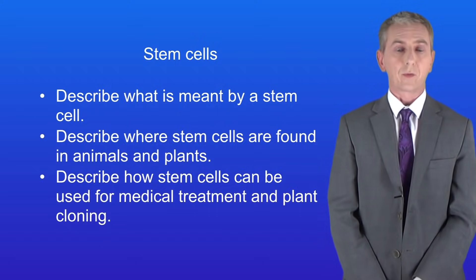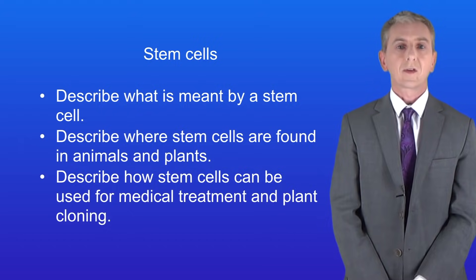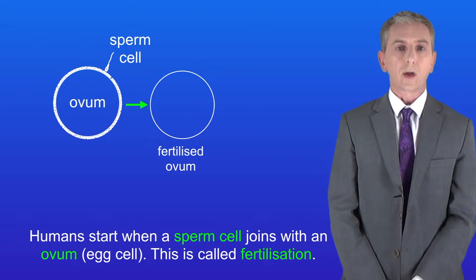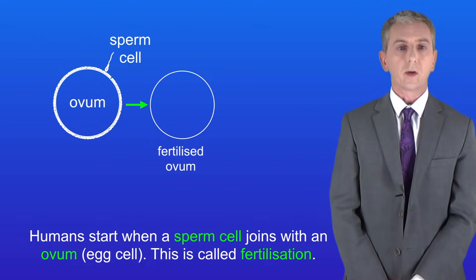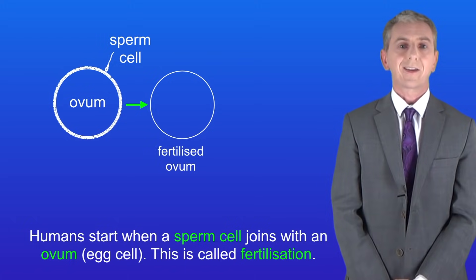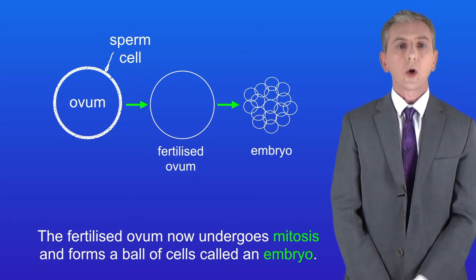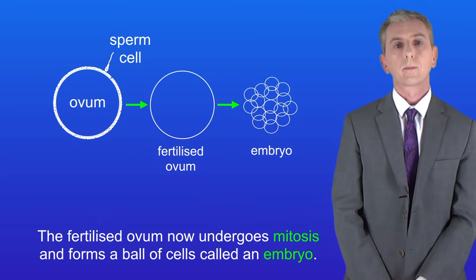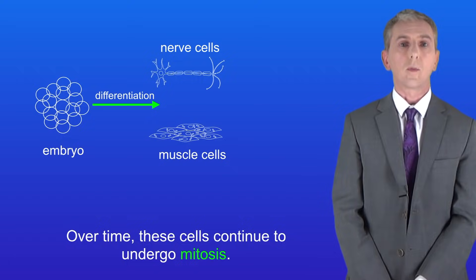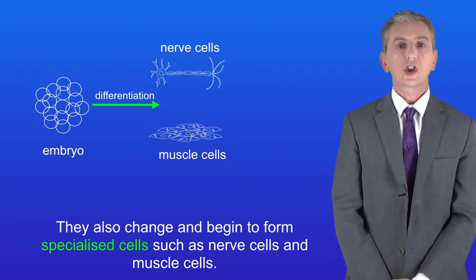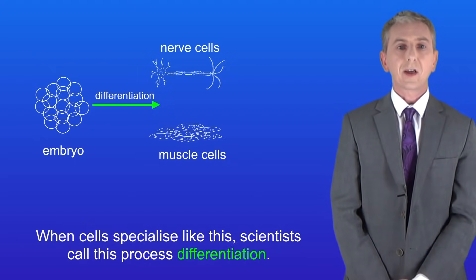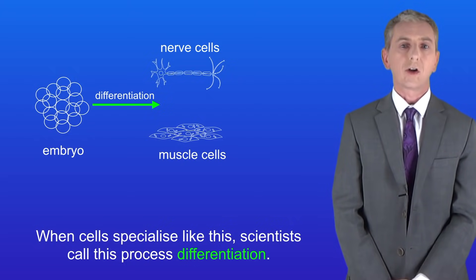Let's start by looking at what's meant by stem cells, using humans as an example, though this also applies to other animals. Humans start when a sperm cell joins with an ovum — an egg cell — in a process called fertilization. The fertilized ovum undergoes mitosis and forms a ball of cells called an embryo. Over time these cells continue to divide and they also change, beginning to form specialized cells such as nerve cells and muscle cells. Scientists call this process differentiation.